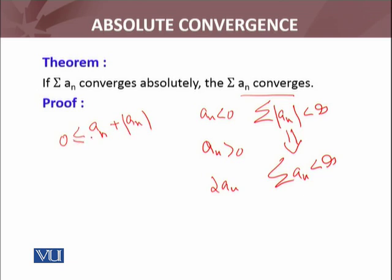Equality holds when both are positive. If one is negative and one positive, it's zero, which is ≤ 2|aₙ|. This is always true. This inequality is very important in deciding about the convergence of that series.